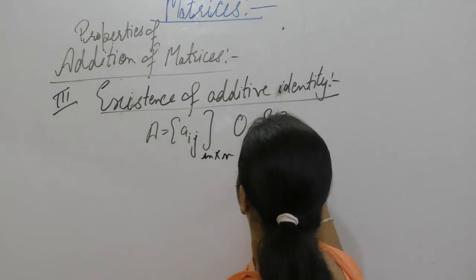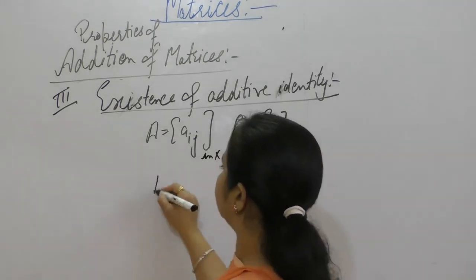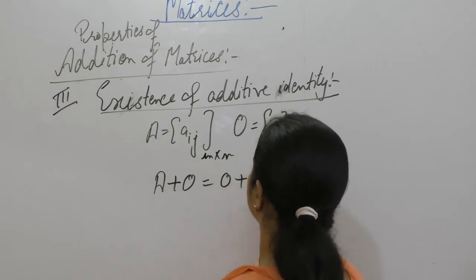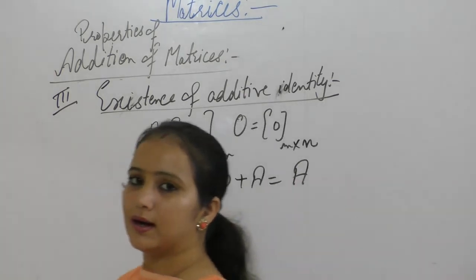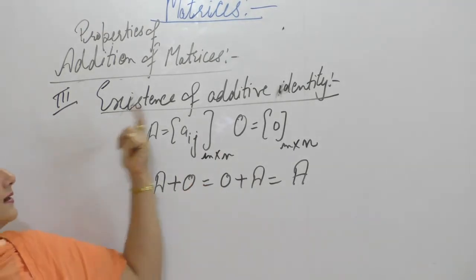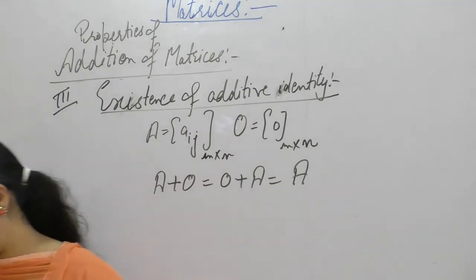Then A plus 0 or 0 plus A, that is equal to matrix A. So 0 is called the additive identity under addition.